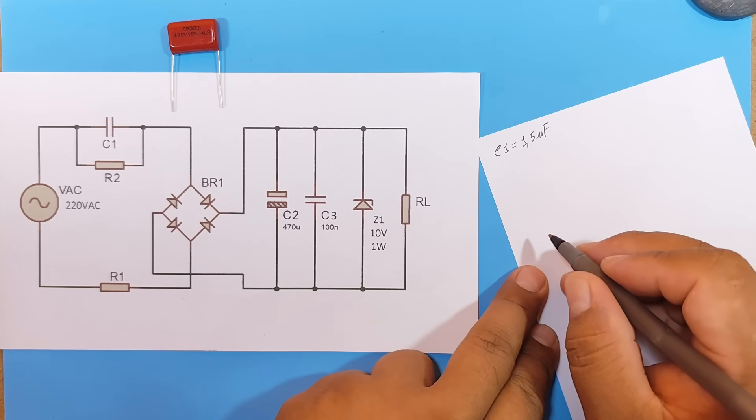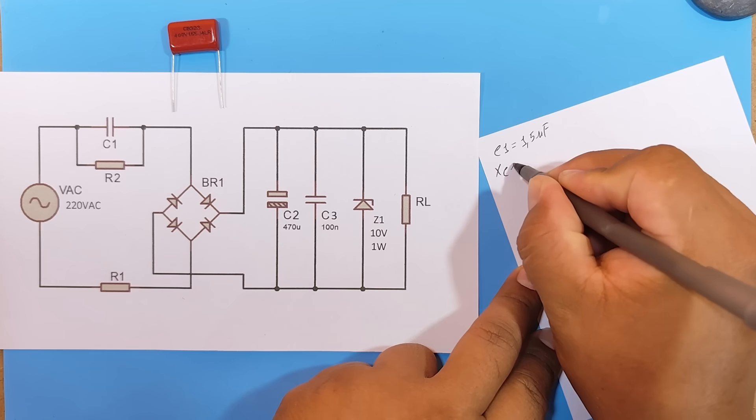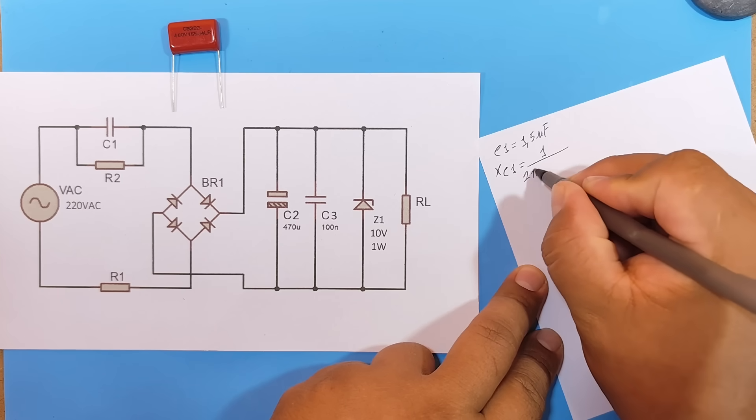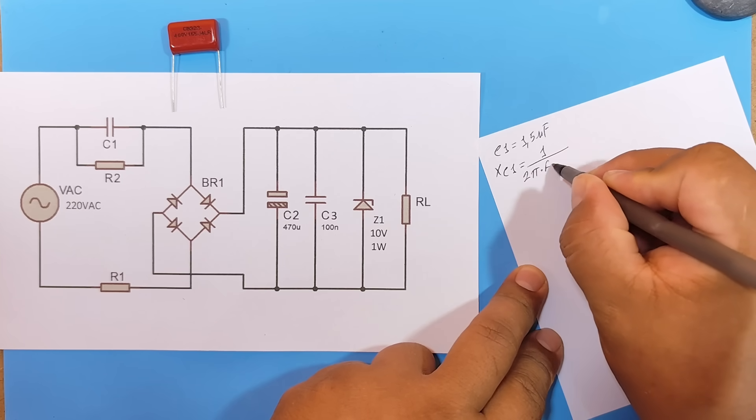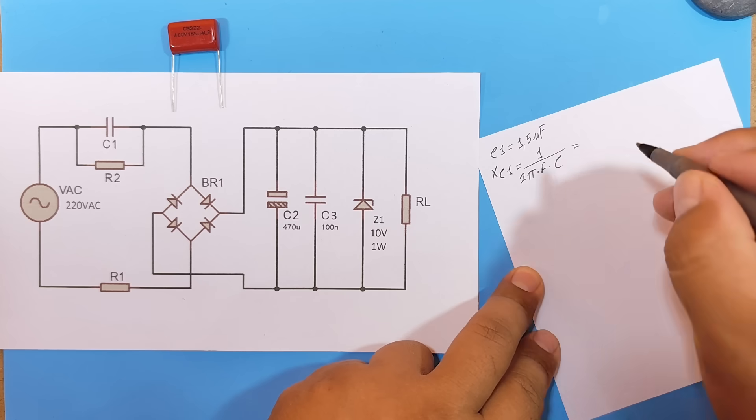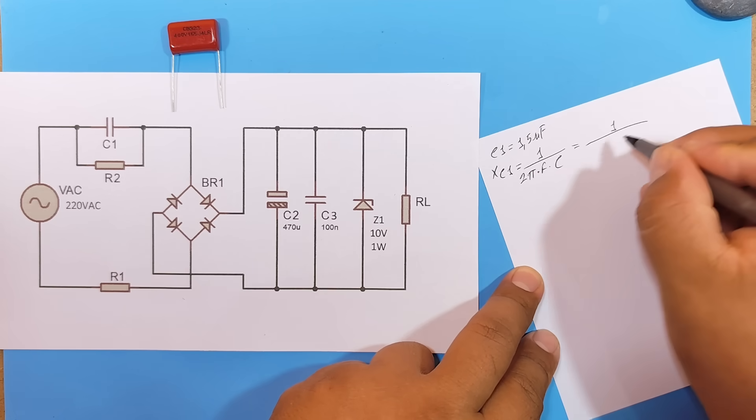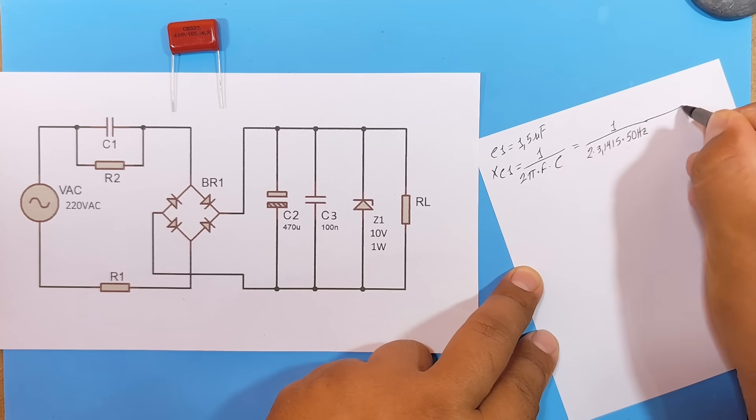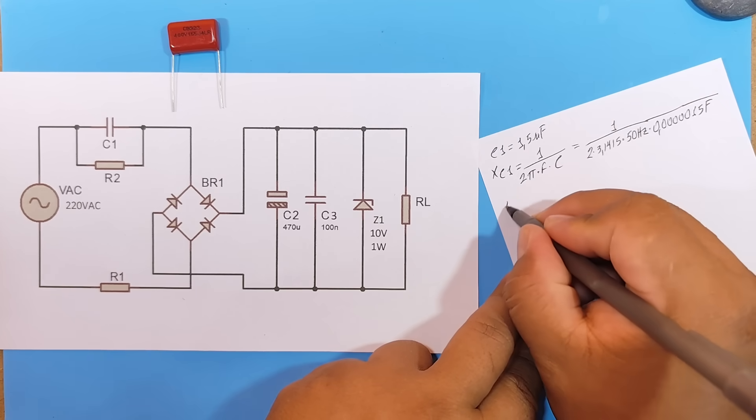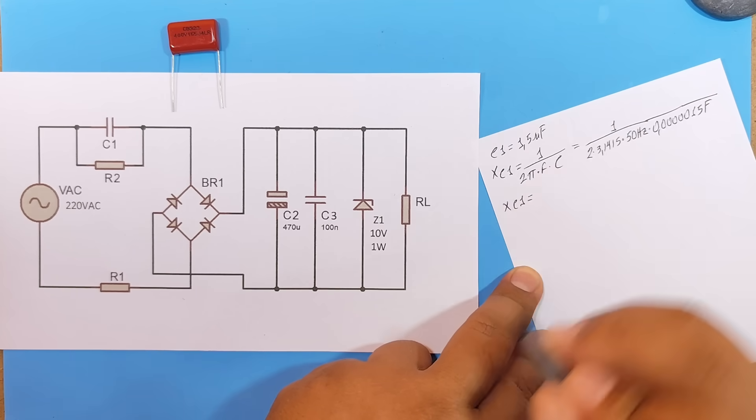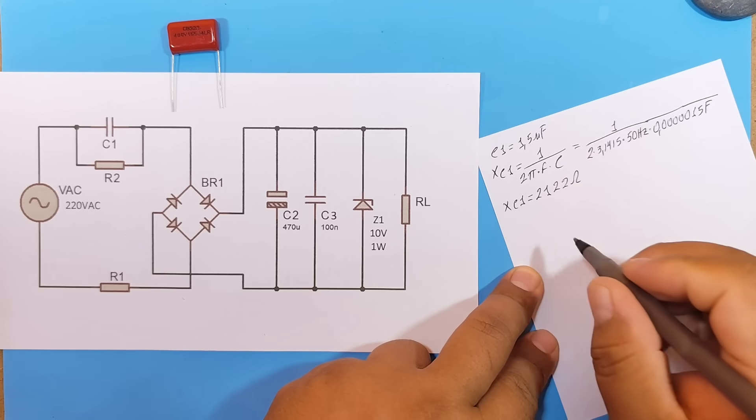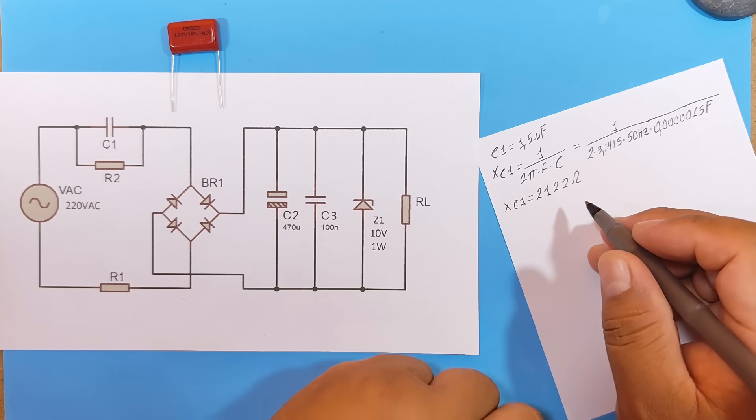With that, we are going to calculate the reactance. The reactance of that capacitor will be equal to 1 divided by 2 times pi, times the frequency, times the capacitance. We substitute the values. And the resulting reactance would be 2,122 ohms. That's the resistance our capacitor offers.